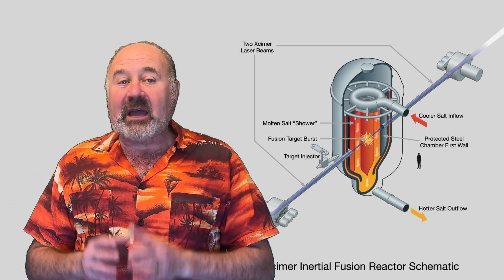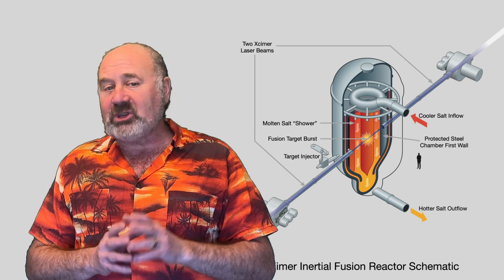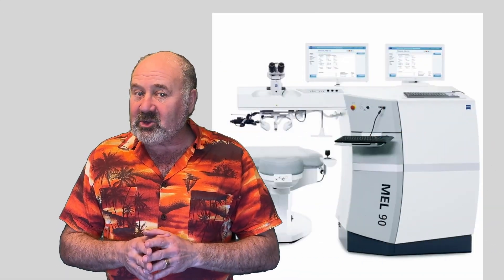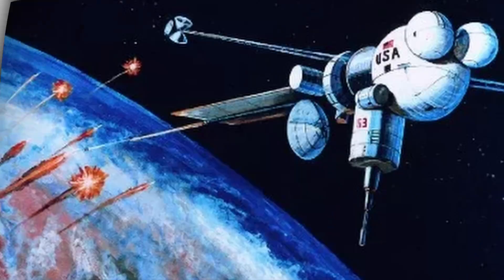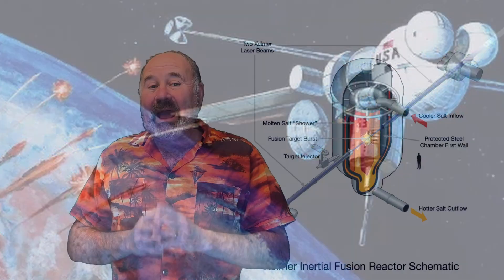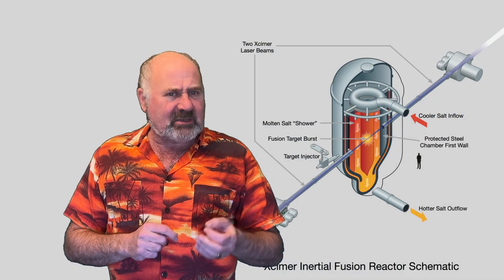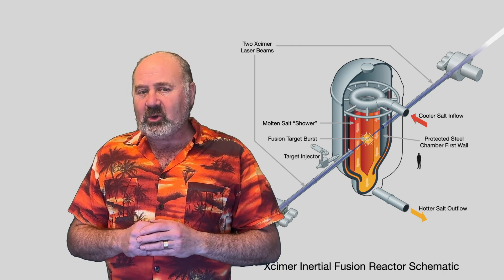Xcimer gets its name from the type of lasers they'll be using to provide this tremendous amount of energy on target. Excimer lasers are commonly used for delicate eye surgery and semiconductor manufacturing. There was also significant work carried out by the Star Wars Missile Defense Program in the 1980s on how to build high-powered excimer lasers. So 6 megajoules per laser is pushing the boundary, but they're not starting from scratch.